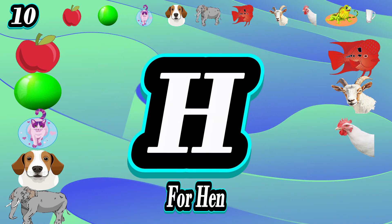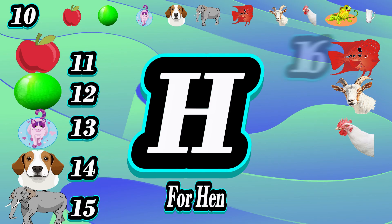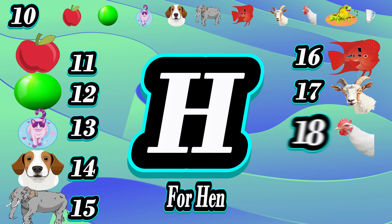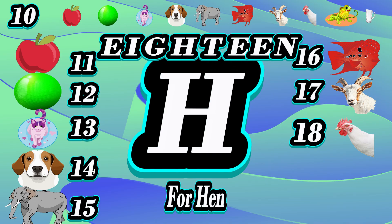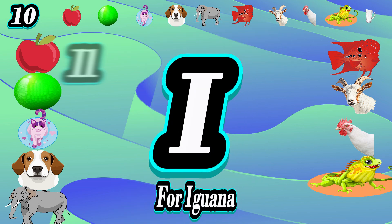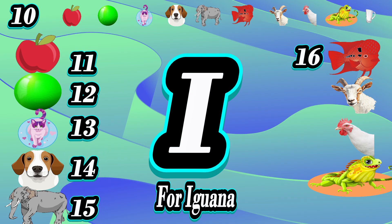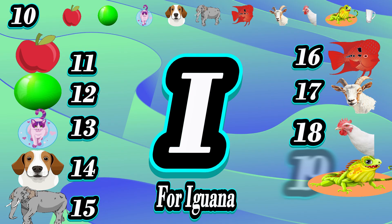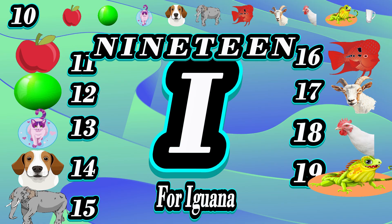17, seventeen. H for hen — 11, 12, 13, 14, 15, 16, 17. 18, eighteen. I for iguana — 11, 12, 13, 14, 15, 16, 17, 18. 19, nineteen.